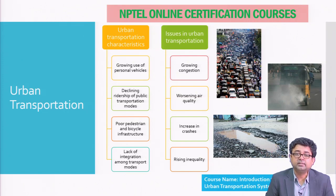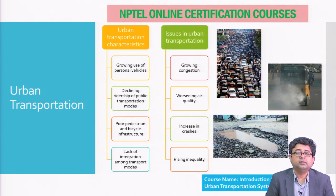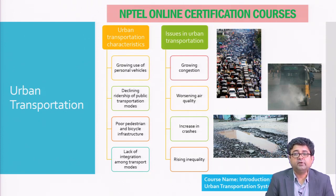Along with this, there is a decrease in ridership of public transportation modes. Either the bus fleet has not increased or maybe the cities do not have a mass rapid transit system like a metro. Whatever may be the case, there are fewer and fewer people using public transportation modes. Thirdly, urban areas are also characterized by poor or degrading infrastructure — not only poor road infrastructure, but the infrastructure provided for pedestrians and bicyclists is not up to standards. And finally, despite having all these modes, we lack integration between them.